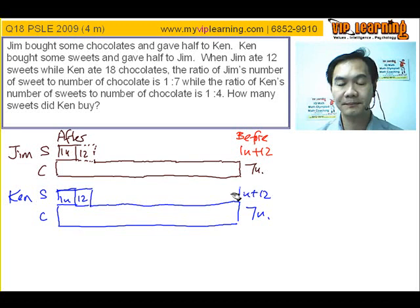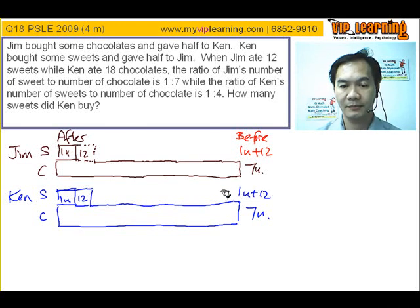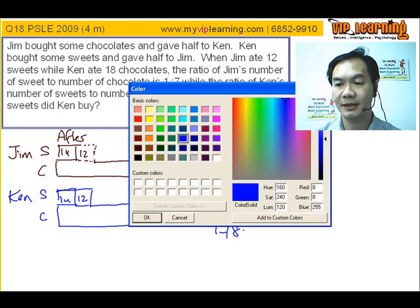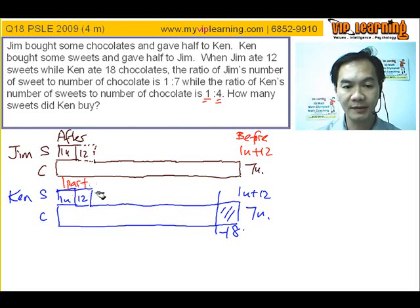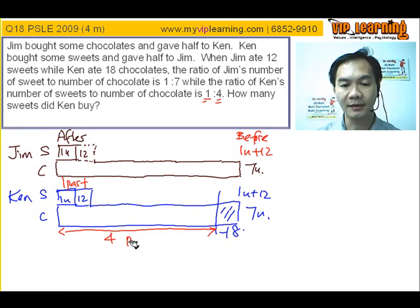After that, what happens? Ken ate eighteen chocolate. And a new ratio emerge. What is the new ratio? One is to four. That means this is one part here versus four parts. Four parts here. One is to four.